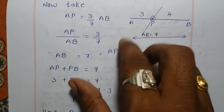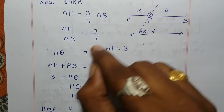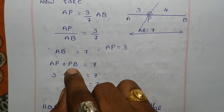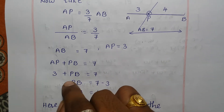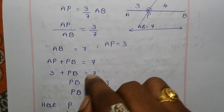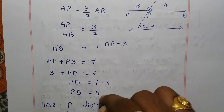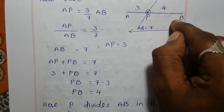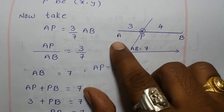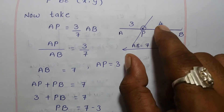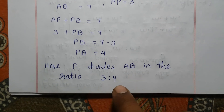AB is a combination of AP and PB. AP is 3 plus PB, which equals 7. So PB = 7 - 3 = 4. Therefore, P divides the line segment AB in the ratio 3:4.